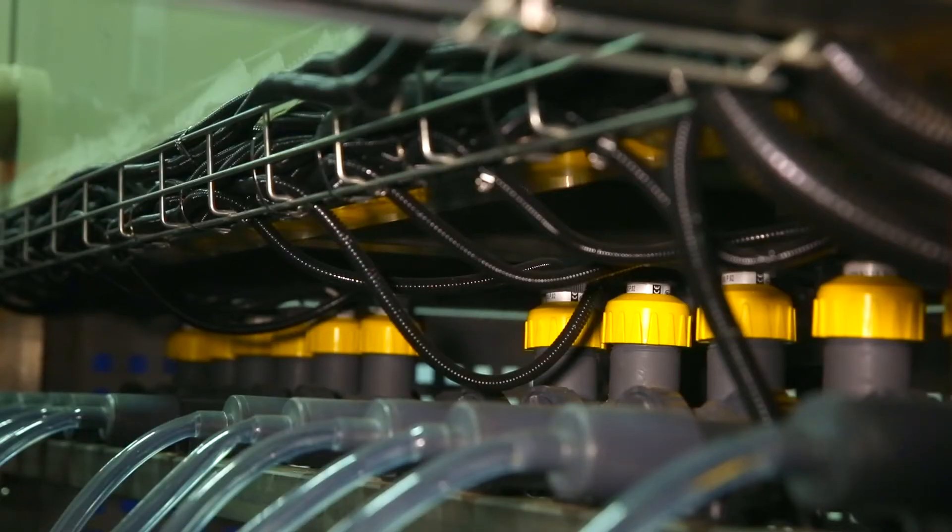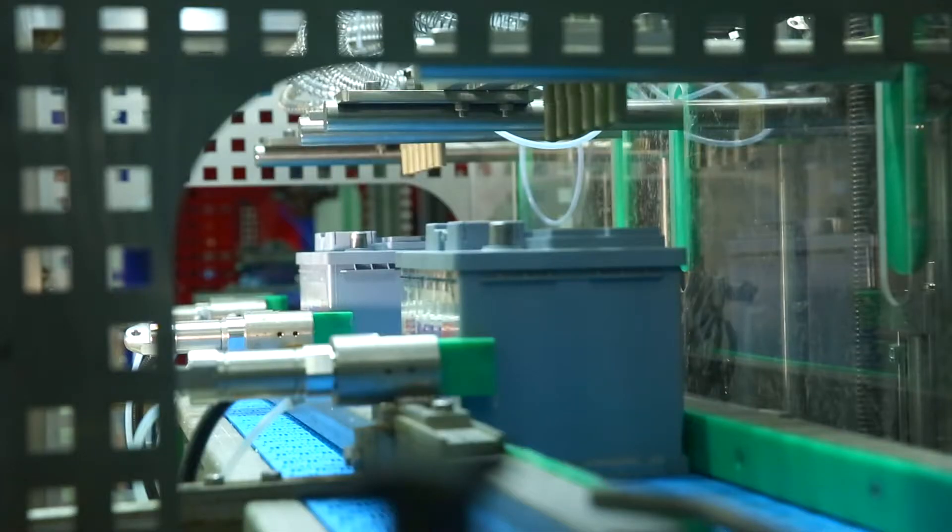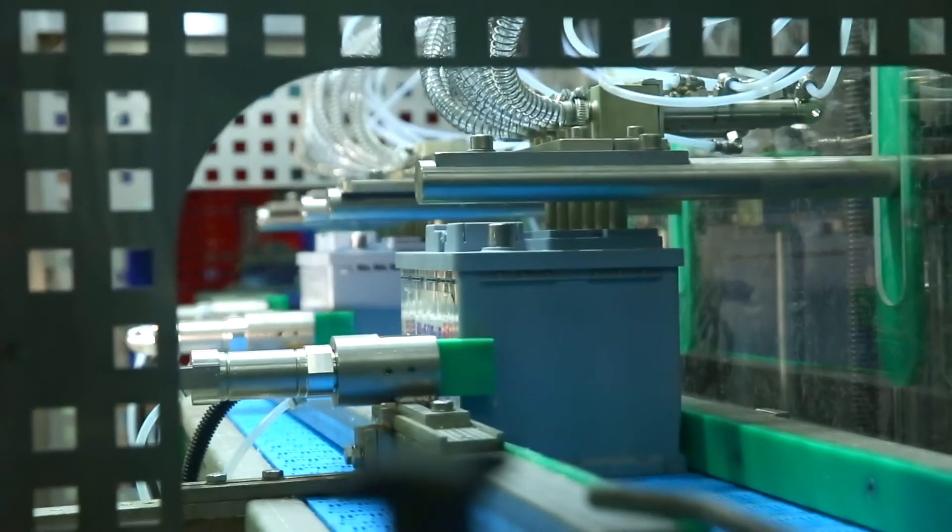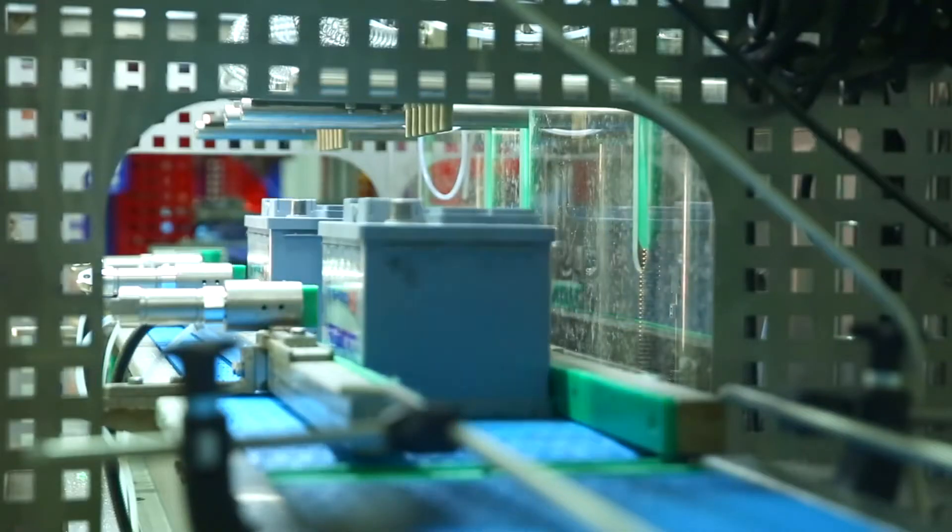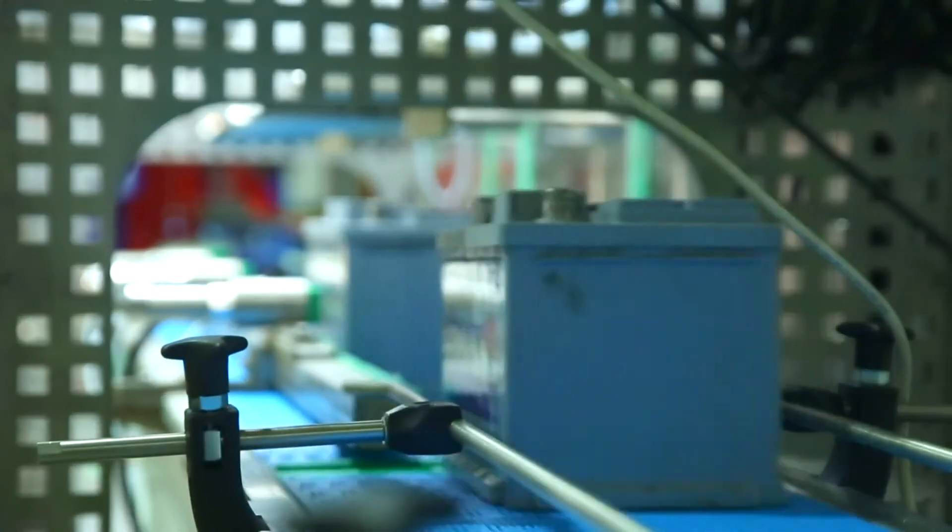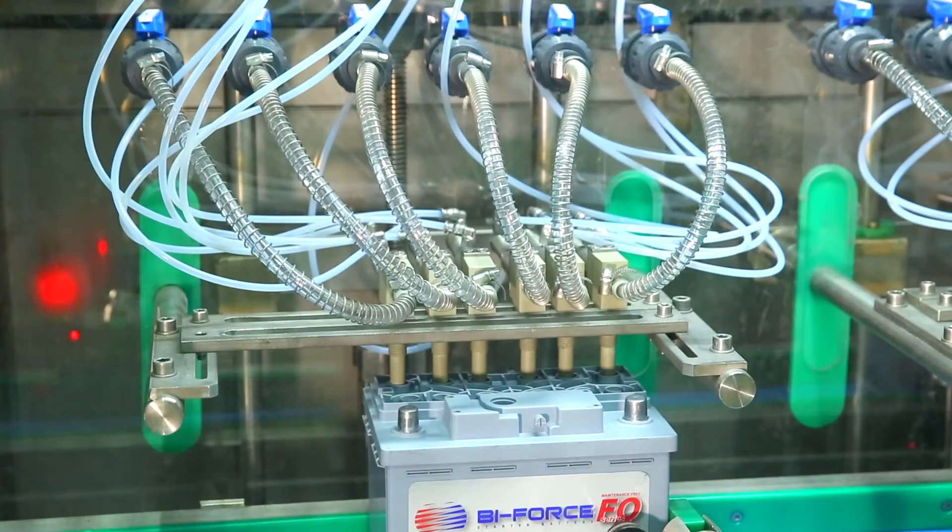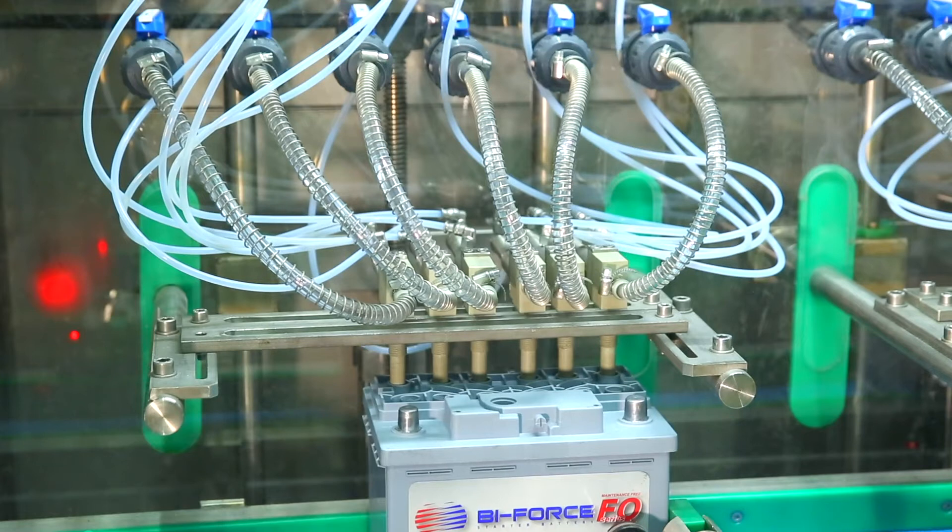A machine with two working heads can be configured to fill one or two batteries per cycle. The built-in vacuum extractor prevents dripping of the electrolyte and ensures the cleanliness and safety of the work process. The absorber of acidic vapors built into the vacuum system extends the life of the pump.